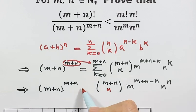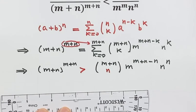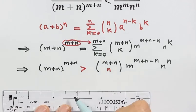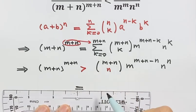Then this equal sign becomes greater than. Okay, so let's simplify the right hand side. Then here we have (m plus n) choose n.